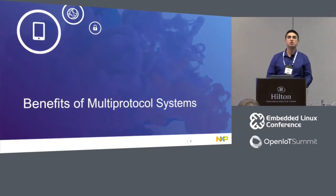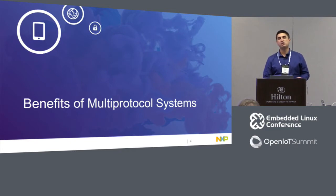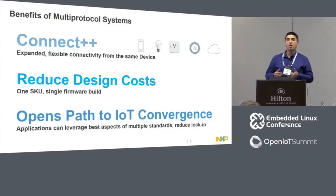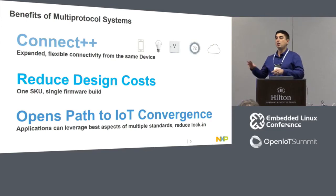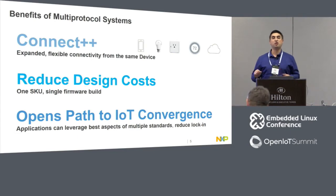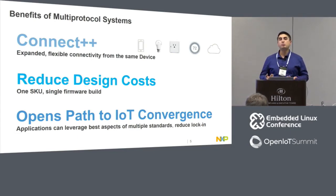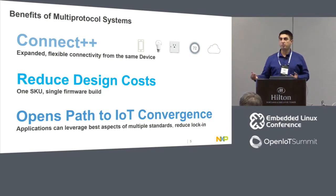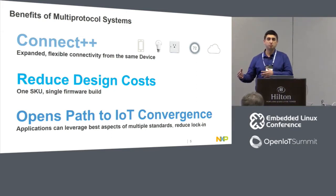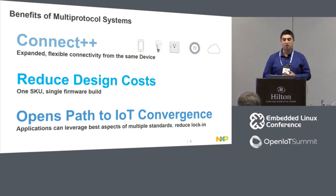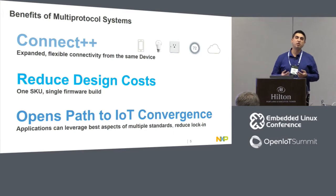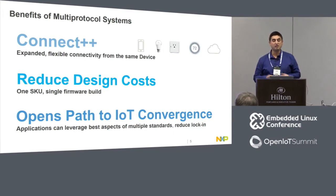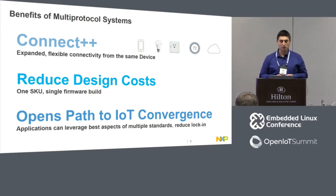Let's understand why it would be good to have a system that implements multiple protocols. There are about three main reasons, and we're focusing on the edge node here, not necessarily on the gateway. First, it greatly expands connectivity—the number of devices and networks that an IoT device can connect to. For instance, if you implement BLE, you can connect to smart devices, and if you add another standard, you can connect to mesh networks, making it very flexible to add multiple connectivity paths.